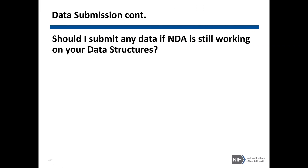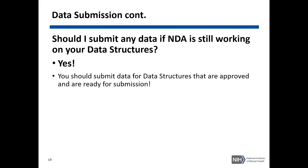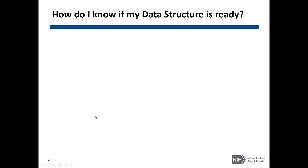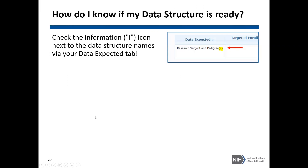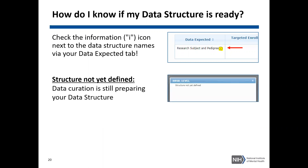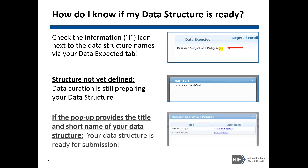If some of your structures are not yet ready for submission, you should still submit data for the structures that are ready and approved. To check if your structure is ready for submission, visit your data expected tab. In your data expected list, you should see an information eye icon next to your data structure's name. Click that eye icon and you'll see one of two messages: either 'structure not yet defined,' meaning it's not ready and our data curation team is still working on it, or a table with your data structure title and short name, meaning your structure is ready for submission.